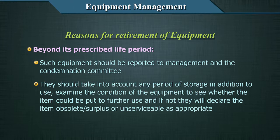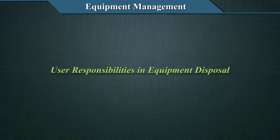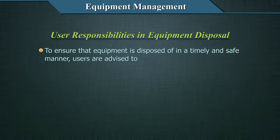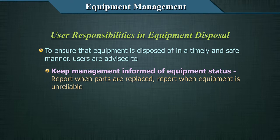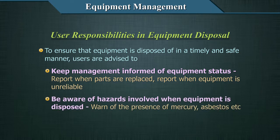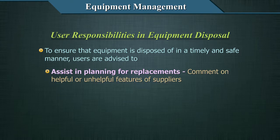The condemnation committee should examine the condition of the equipment to see whether it could be put to further use, and if not, declare it obsolete, surplus, or unserviceable as appropriate. User responsibilities in equipment disposal include: keeping management informed of equipment status, reporting when parts are replaced, reporting when equipment is unreliable, and being aware of hazards involved in disposal — warning of the presence of mercury, asbestos, etc.